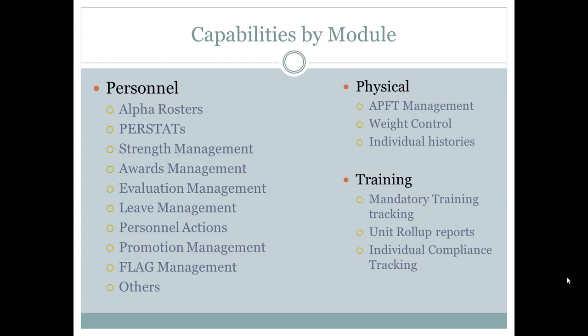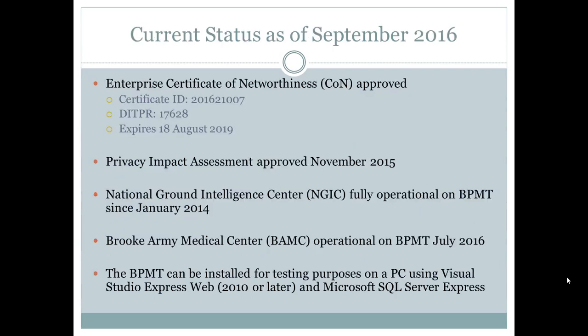The APFT module handles tracking PT requirements and scores, and generates reports that include extended scores. All reports are basically adjustable on the fly. It also tracks weight control, and individuals can see the history of their APFT scores and weigh-ins. The training module is new in version 3.2 — it tracks all mandatory and optional training. You enter the courses, classes required, and the frequency, and it generates a report showing by organization what percentage has completed that training, down to the individual level. It even provides links directly to online training.